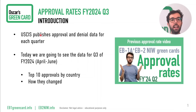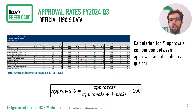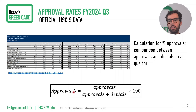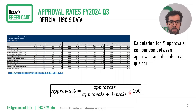First of all, as usual, just the disclaimer that all this data is publicly available. You can go to the link in the description of this video, open an Excel file with all the numbers you see here and all the data by country. The way we calculate approval percentage needs a little calculation because USCIS doesn't report it directly. We take the number of approvals for that quarter and divide by the sum of approvals and denials, then multiply by 100 to get the percentage.